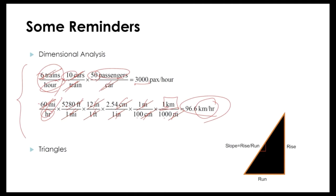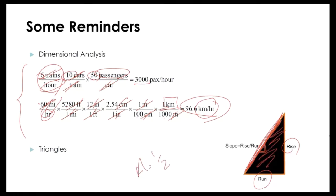Another very useful concept in traffic flow theory is triangles. We have many triangles when working with trajectories, fundamental diagrams, and traffic data. The slope of a triangle is rise divided by run (or height over base), and the area of a triangle is half of rise multiplied by run.